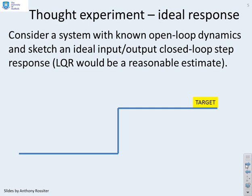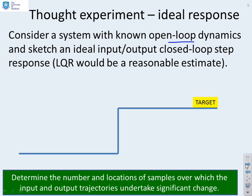Let's do a thought experiment. First thing to do is to define what we consider to be an ideal response. Consider a system with known open-loop dynamics and sketch an ideal input-output closed-loop step response. You could use LQR or something like that to determine the number and locations of samples over which the input and output trajectories undertake significant change.